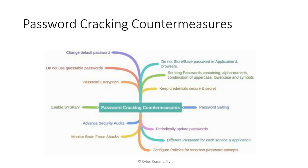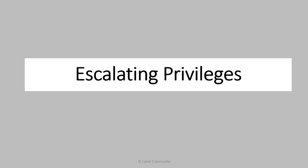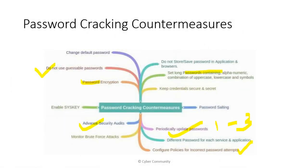Password cracking countermeasures include: having a strong password policy, not storing or saving passwords in applications, setting long alphanumeric passwords, enabling password encryption, not using guessable passwords, conducting advanced security audits, periodically updating passwords (monthly or quarterly), and enforcing lockout policies for incorrect password attempts. That covers password cracking — labs demonstrating how to crack passwords will be shown as well.